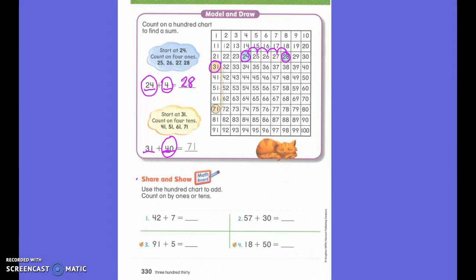So whenever I see my tens, I move down 1, 2, 3, 4 because it told us to move down 4 times. And I ended up on the number 71. So 31 plus 40 equals 71.